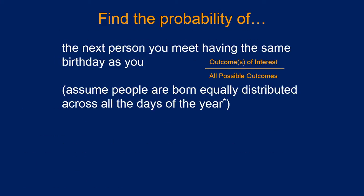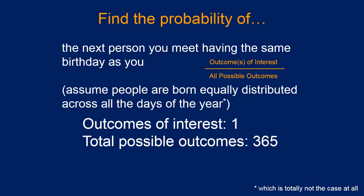The probability that the next person you meet will have the same birthday as you. If you assume that people are born equally distributed across the days of the year, then the outcomes of interest is 1. The next person you meet, as far as you know, they could have been born on any random day of the year. But your birthday is one specific thing. There's only one way that you can find a match. There's 365 possibilities, but only one of those is a match for your birthday. So it's 0.0027, about one quarter of one percent probability.